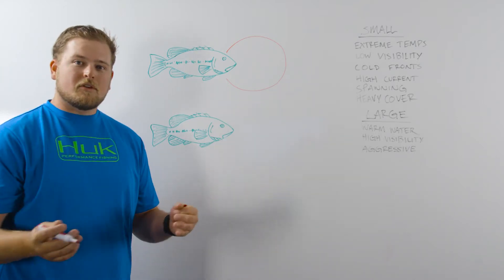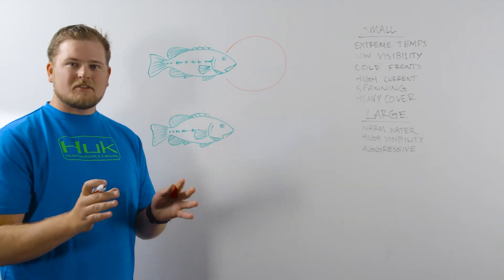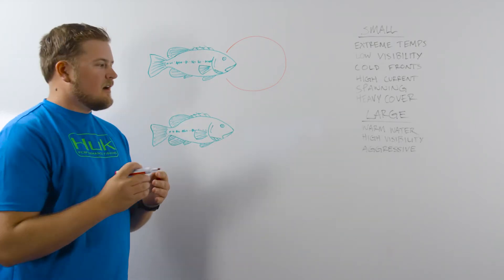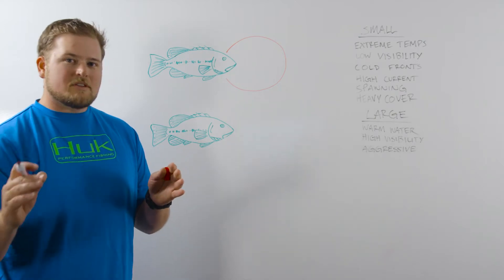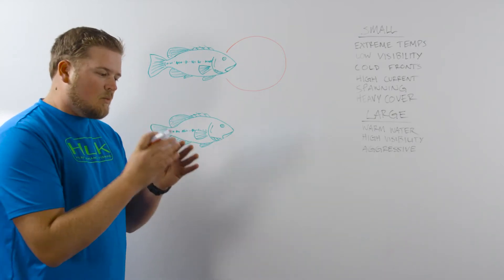And then it could be high current where they're sticking to one little eddy zone outside of the current where they're ambushing prey, and they don't really want to move into the current. They just want to stay in that one little position.